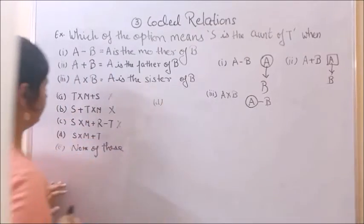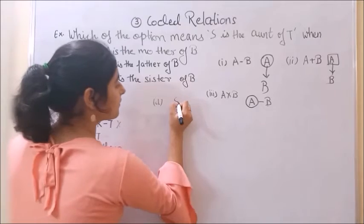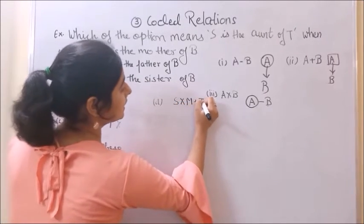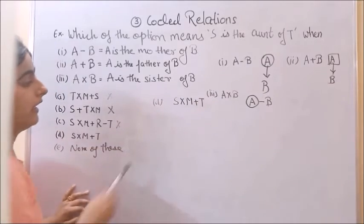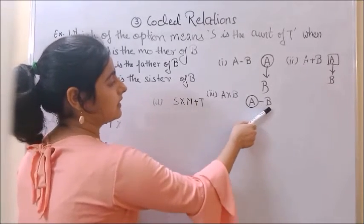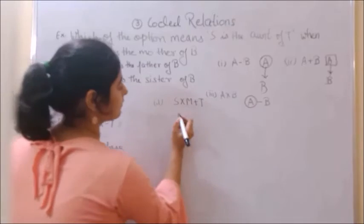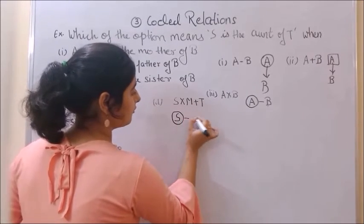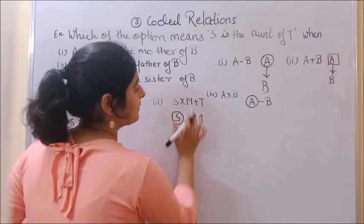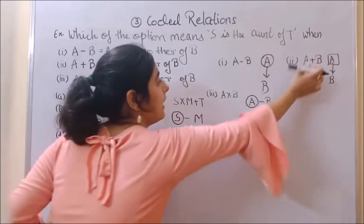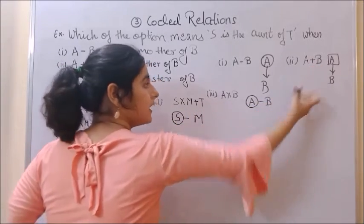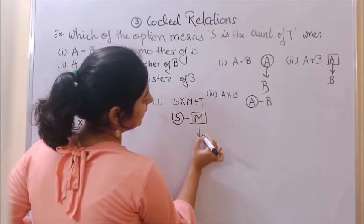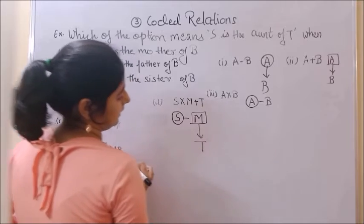Option D is S into M plus T. S into M means S is the sister of M, sister of M. M plus T is M is the father of T. M is male and father of T.